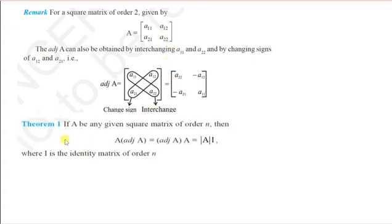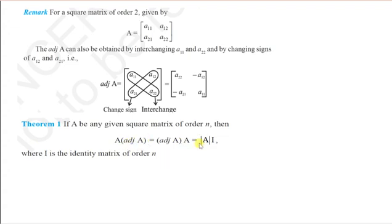Now we have a theorem: if A is any square matrix of order n, then A·adj(A) = adj(A)·A = |A|·I, where I is the identity matrix of order n. There may be a question based on this theorem. Let us prove it.